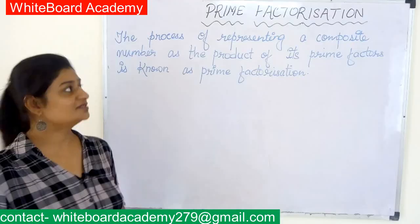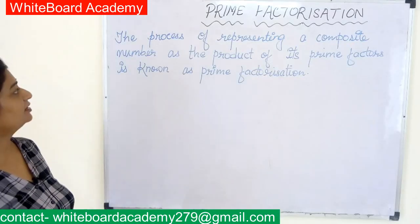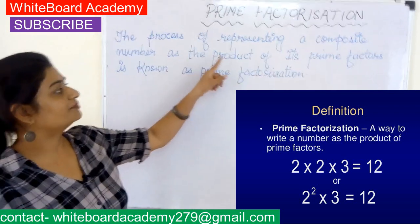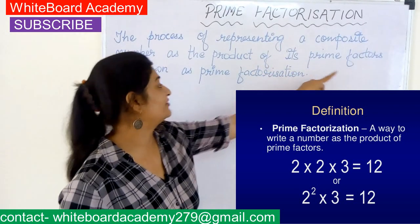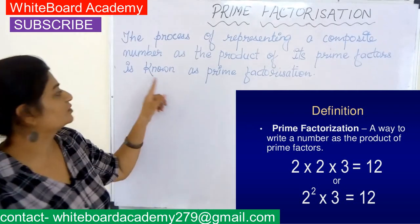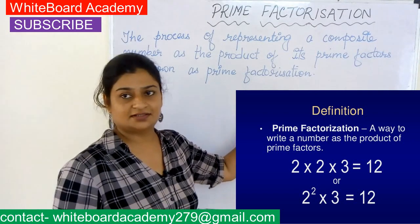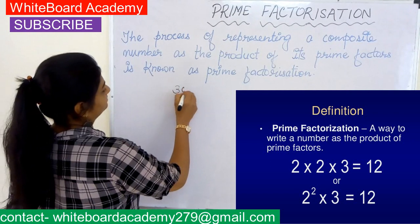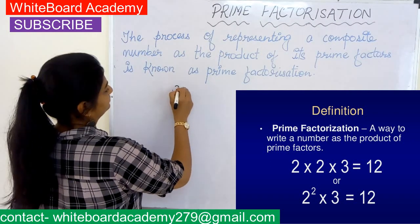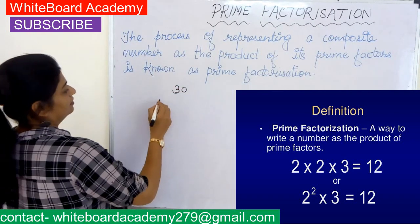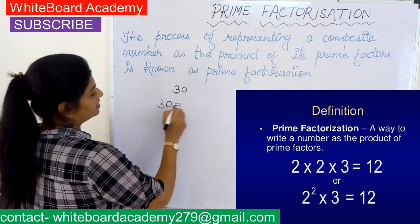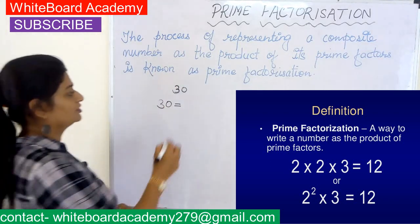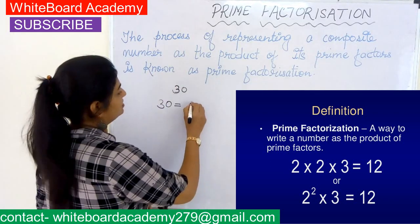Now let's move on to prime factorization. The process of representing a composite number as the product of its prime factors is known as prime factorization. Let's take one example: 30. We begin with the smallest prime factor of 30, which is 2.